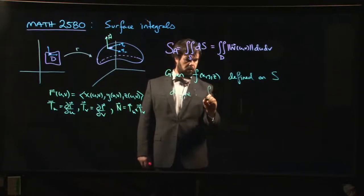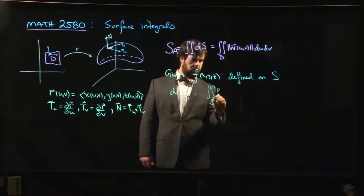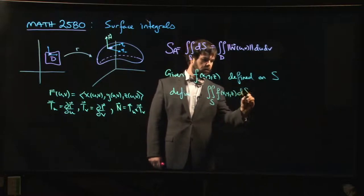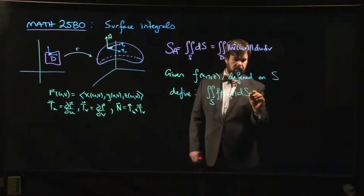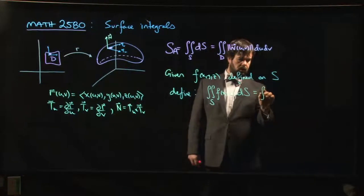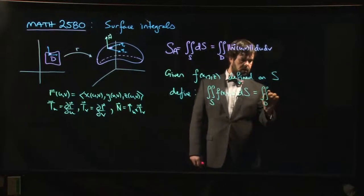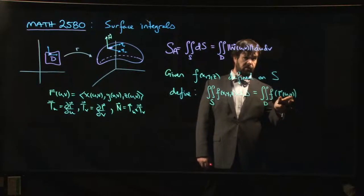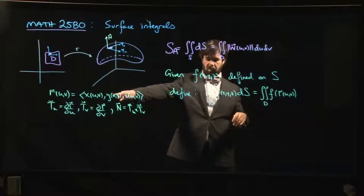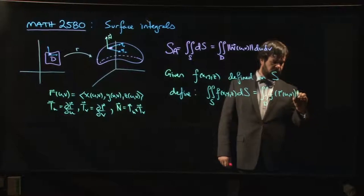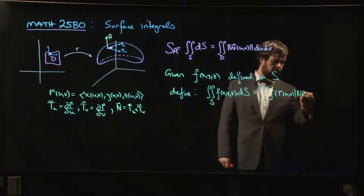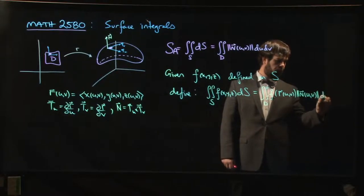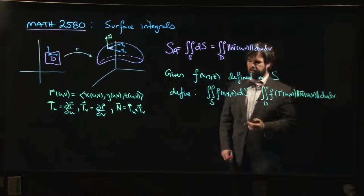So we can define the integral over S, f of x, y, z, ds. We can define that to be the integral over d, f of... so this notation here is indicating that x, y, z are all being written as functions of u and v via the parametrization, times the magnitude of n, and then we integrate with respect to u and v.